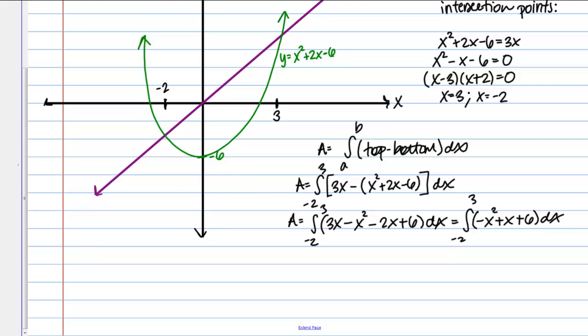Now we can go ahead and find the antiderivative. If we do that we get negative X cubed over 3 plus X squared over 2 plus 6X, and we want to evaluate from negative 2 to 3.